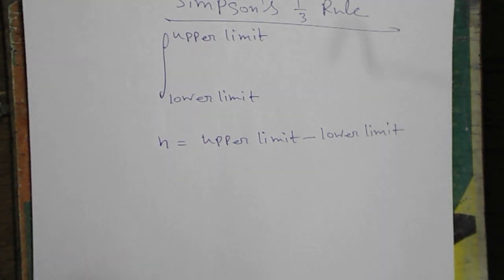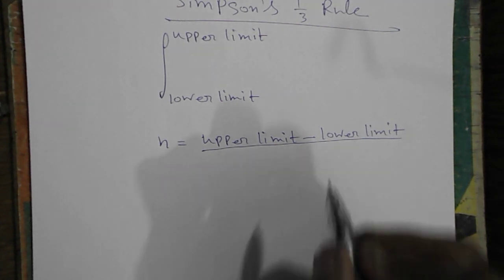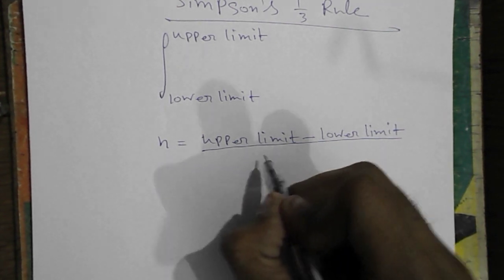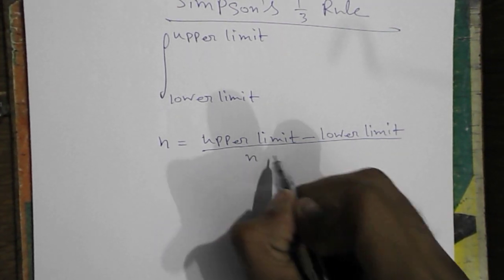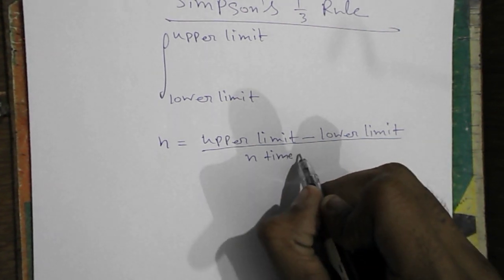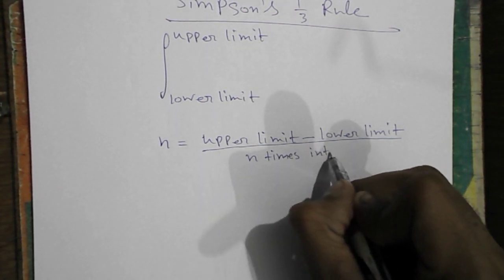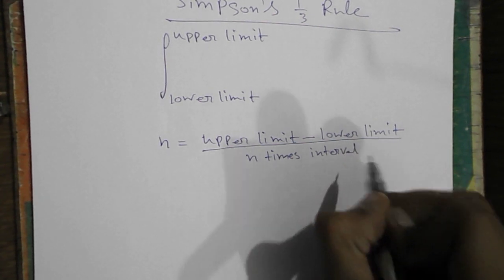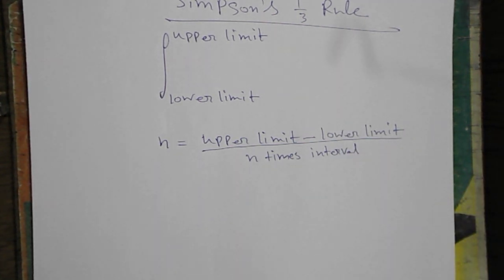And then we will divide the result of the subtraction by the n times interval. That will be declared in the question.